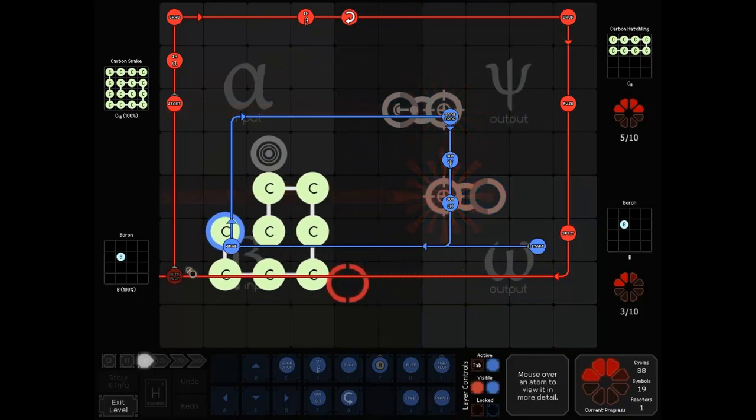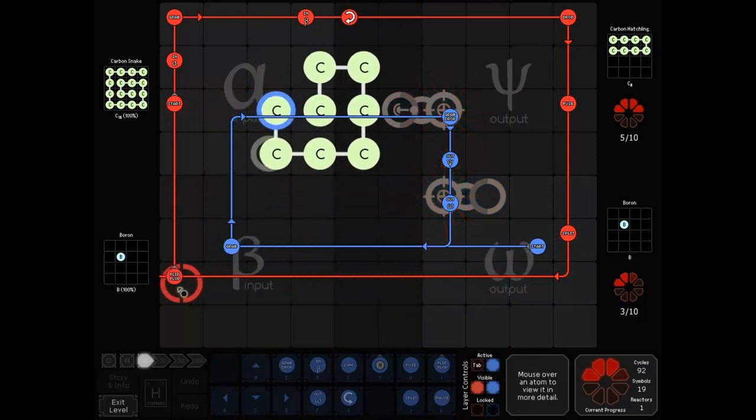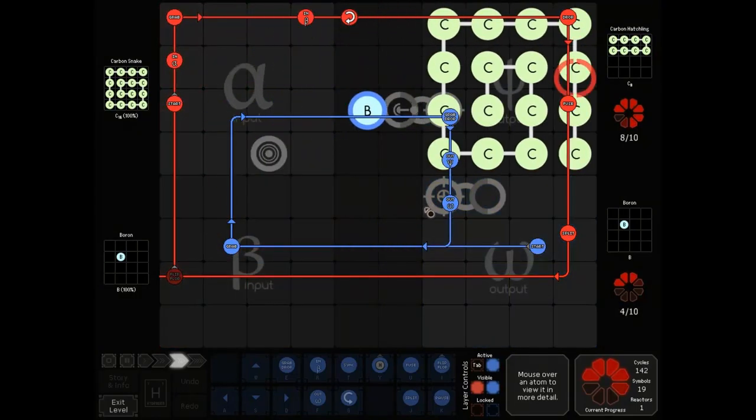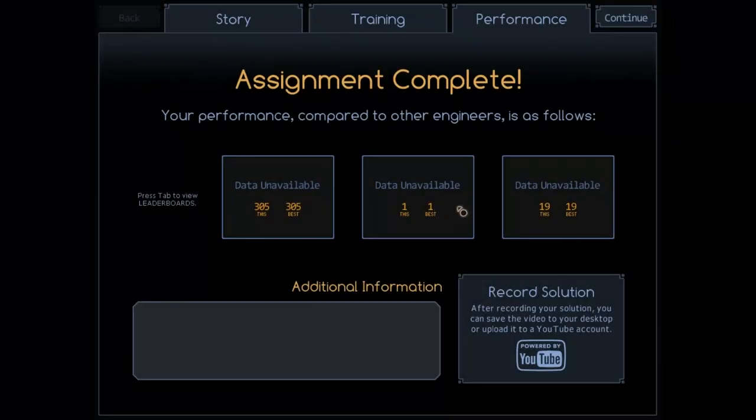Also, I think Cairn told me that this move here, for a one cycle delay, he called that the guava delay, which I was pretty happy with. But he also got 19 symbol solution, so it ends up a little bit faster.